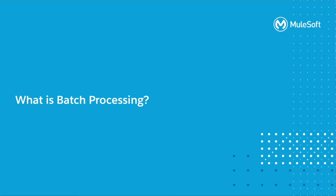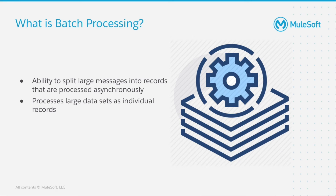What is batch processing? Batch processing refers to the ability to split large messages into records that are then processed asynchronously as individual records. This generally happens in four steps. First, split large or streamed messages into individual records. Then, perform prescribed actions upon each record while handling record-level failures that may occur so that the batch job is not aborted. Finally, report on the results of the job and any errors.